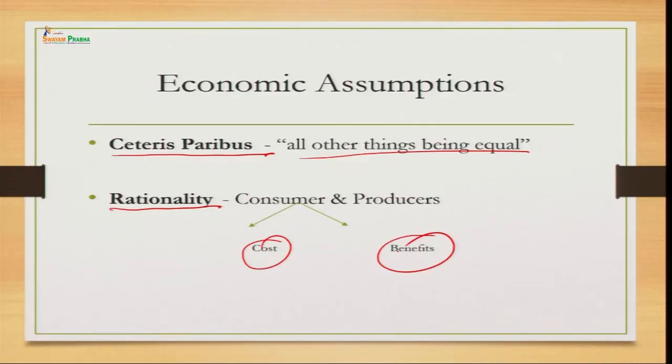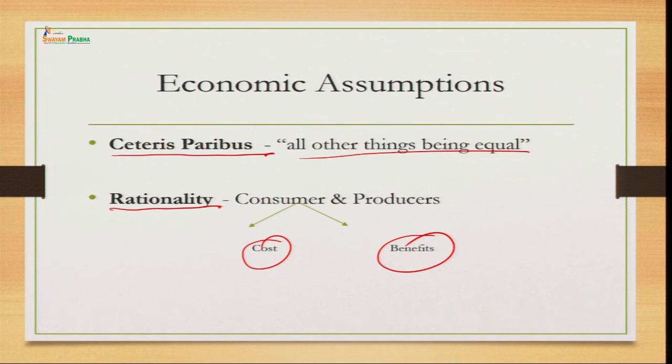The other assumption is rationality. Rationality is already assumed by economists — that consumers as well as producers behave rationally. Rationality means we always analyze the cost as well as the benefit before making any decision, whether the person acts as a consumer or as a producer, because everything involves cost — nothing comes for free. Whatever you are doing, you always analyze costs and benefits and you will make that choice where benefits exceed costs. This is already assumed by economists — that we all behave rationally. These are the two basic assumptions in economics.